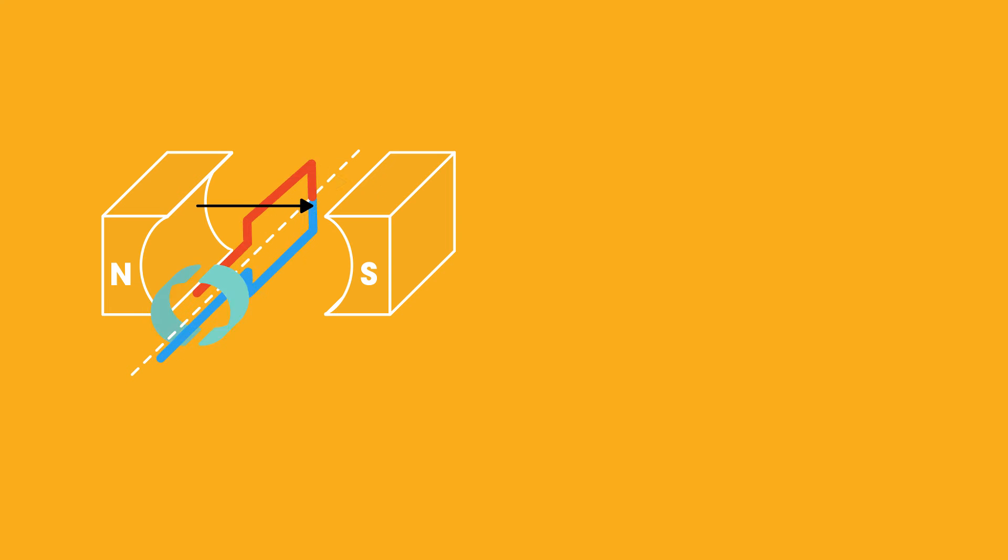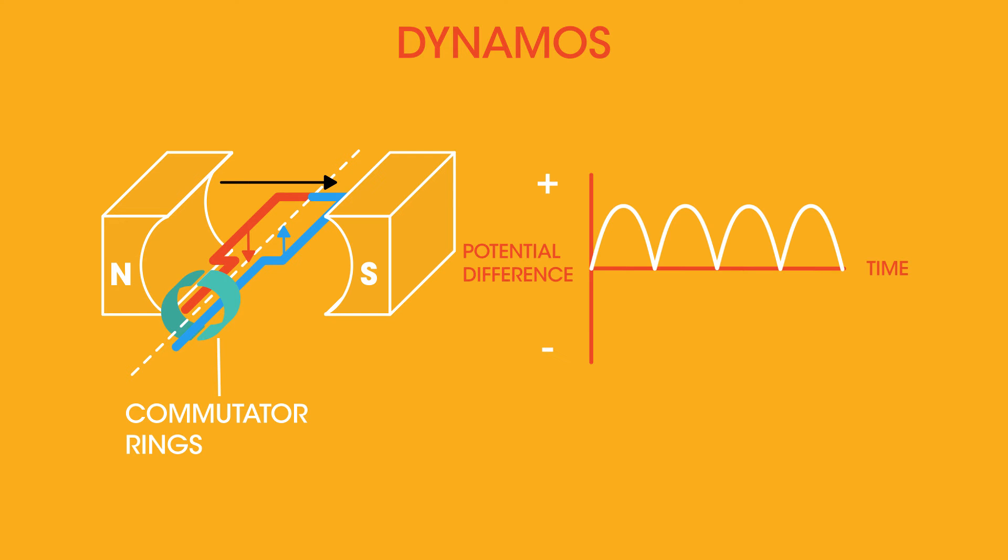So let's now look at the split ring commutator seen in dynamos. The blue side of the coil is moving up and starts off connected to this half of the commutator, and the red side of the coil moving down starts off connected to this half of the commutator. The potential difference graph looks like this, so maximum potential difference when the coil is cutting the magnetic field like this, and as the coil rotates out and isn't cutting the magnetic field anymore, we have a zero potential difference.